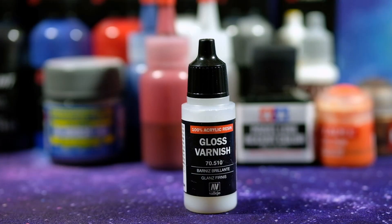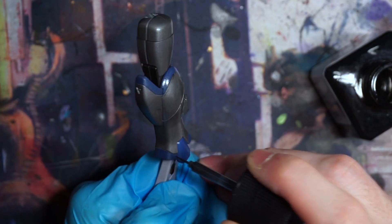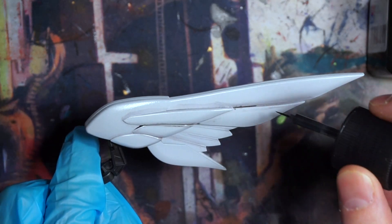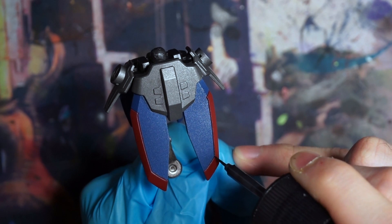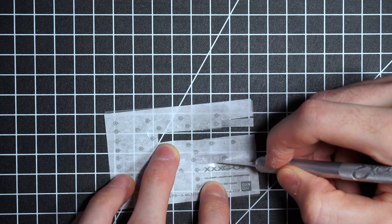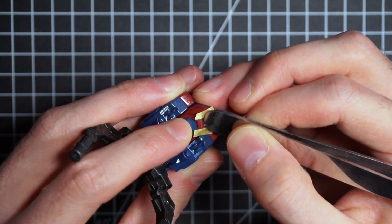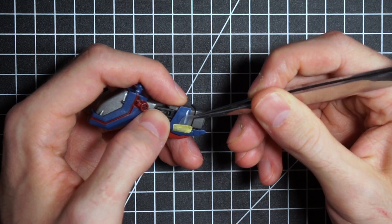After applying a gloss coat, we can grab our panel liner and start filling in all those grooves with the black sauce. And as usual, we are going to clean up our mistakes afterwards with mineral spirits from the hardware store. Once that's done, it's time to apply some decals. I wanted to use up the rest of these dry transfers that came with my master grade heavy arms, for which you simply secure the decal in place with some tape and then give it a good old rub.